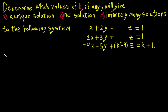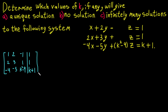Now we will write the augmented matrix. This row represents the first equation, this one the second equation, and this one the third equation.